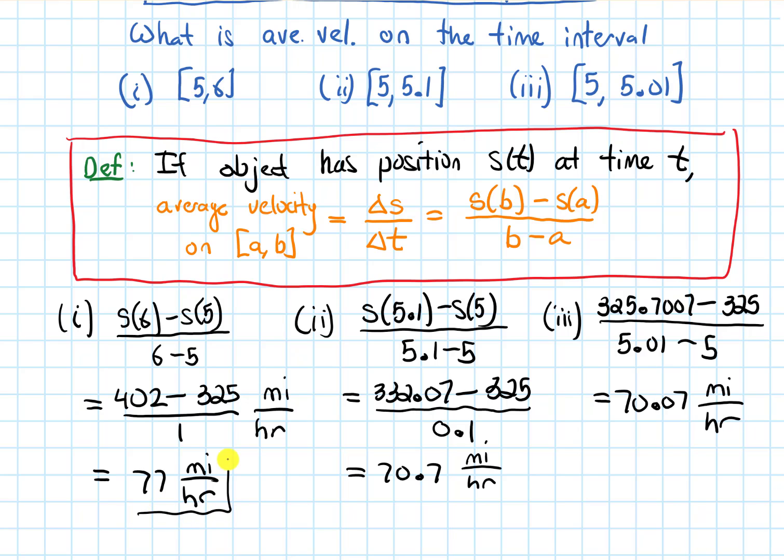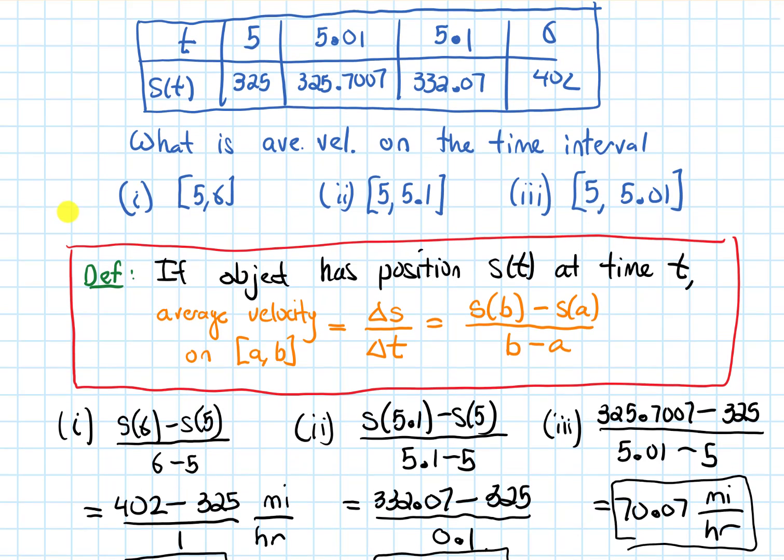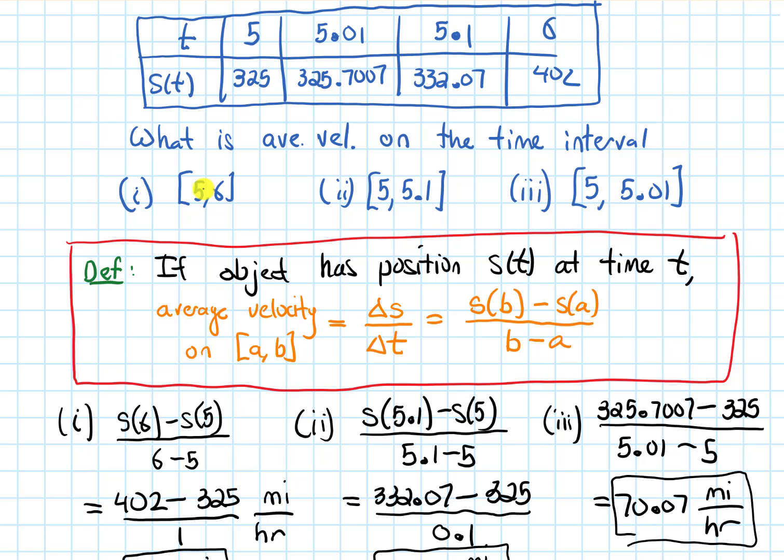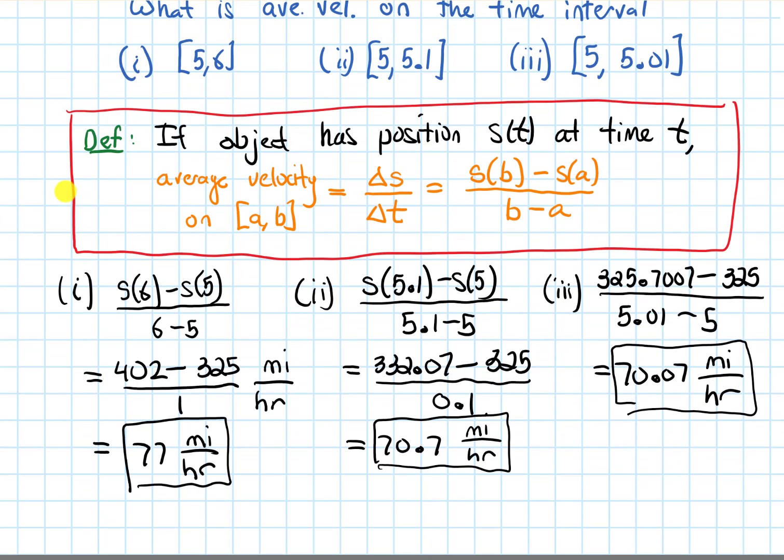So let's box each of these. These were our average velocities. So looking at these values, we've made the time interval get smaller and smaller and smaller. From 5 to 6, and then 5 to 5.1, and then 5 to 5.01, it's getting really, really small. And notice that these velocities that we're getting seem to be getting super close to 70.